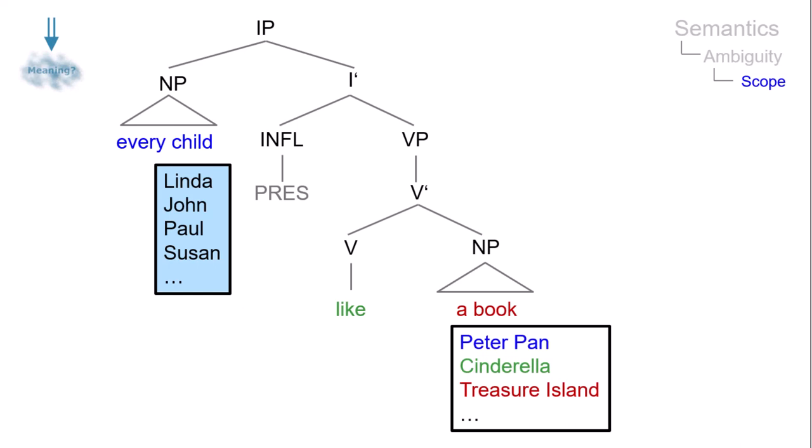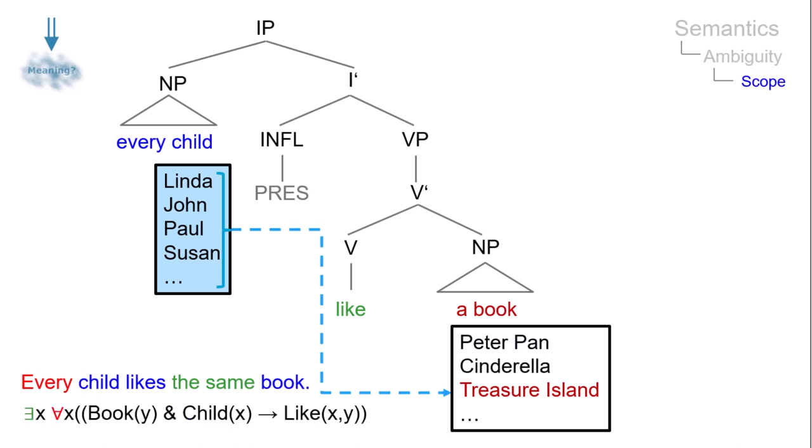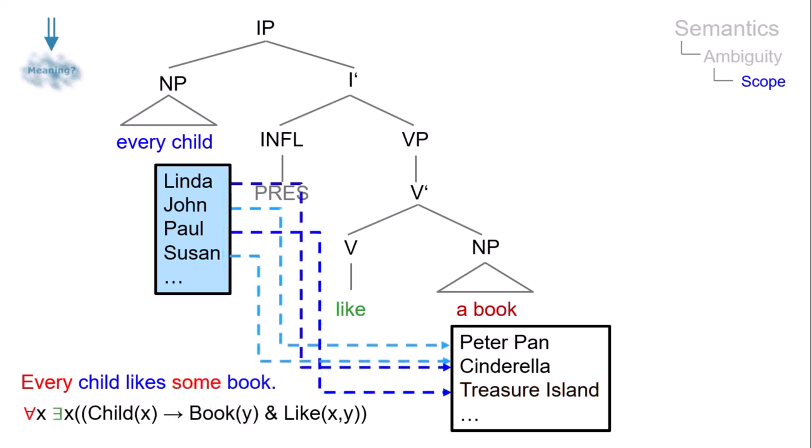So we have one constituent structure, but two interpretations. One where the universal quantifier every is within the scope of the existential quantifier. And one where we have the reverse order.